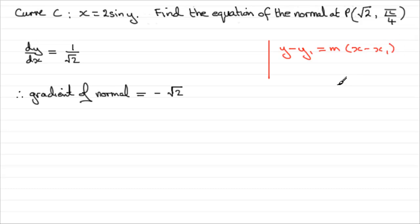I'd use this over y equals mx plus c purely because I know what x1 and y1 are. That's the x coordinate and the y coordinate of P. So x1 is root 2, y1 is pi upon 4, and m, the gradient, is minus root 2. So I don't have to stop off and try and work out what the constant in y equals mx plus c is, that constant c.